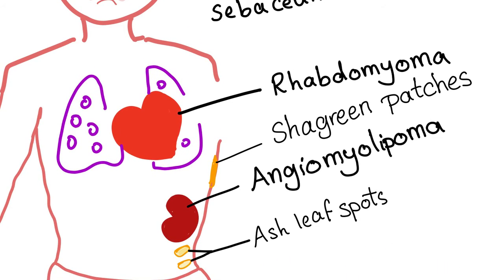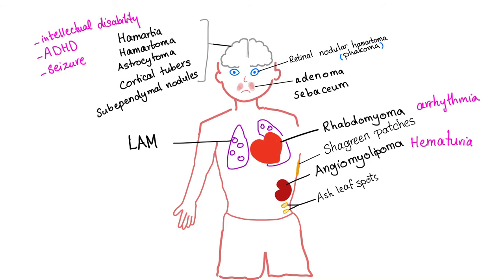There are skin lesions including ash leaf spots, which are hypopigmented lesions, and shagreen patches, which are usually found on the back. In the lungs, the normal parenchyma is replaced by multiple cysts — very similar to a condition known as LAM, which stands for lymphangioleiomyomatosis. The pathological process in tuberous sclerosis and LAM are very closely related.